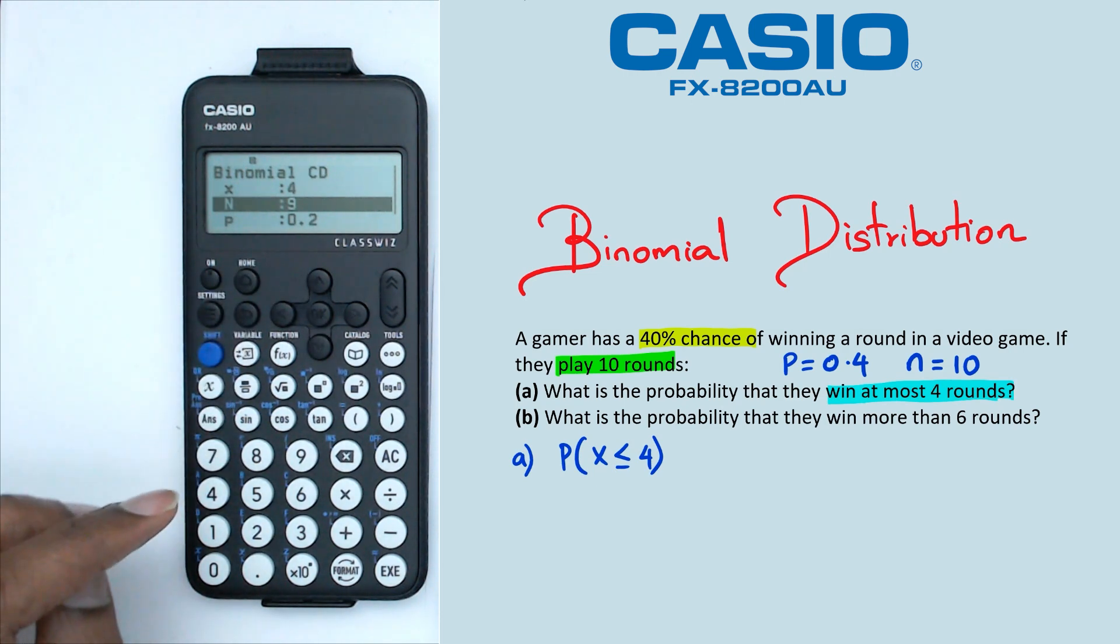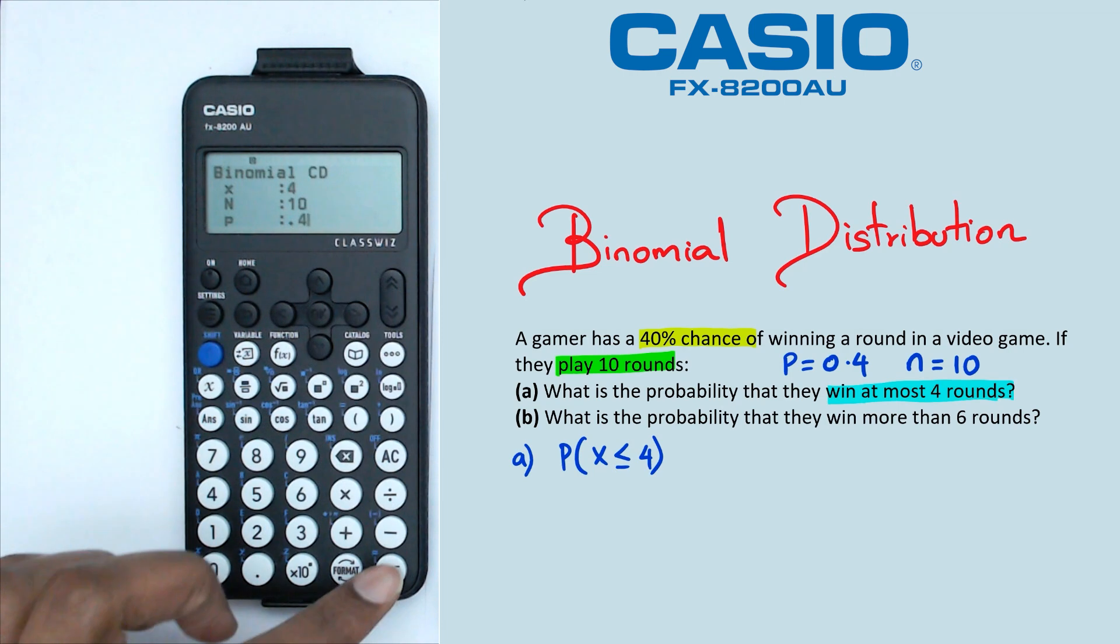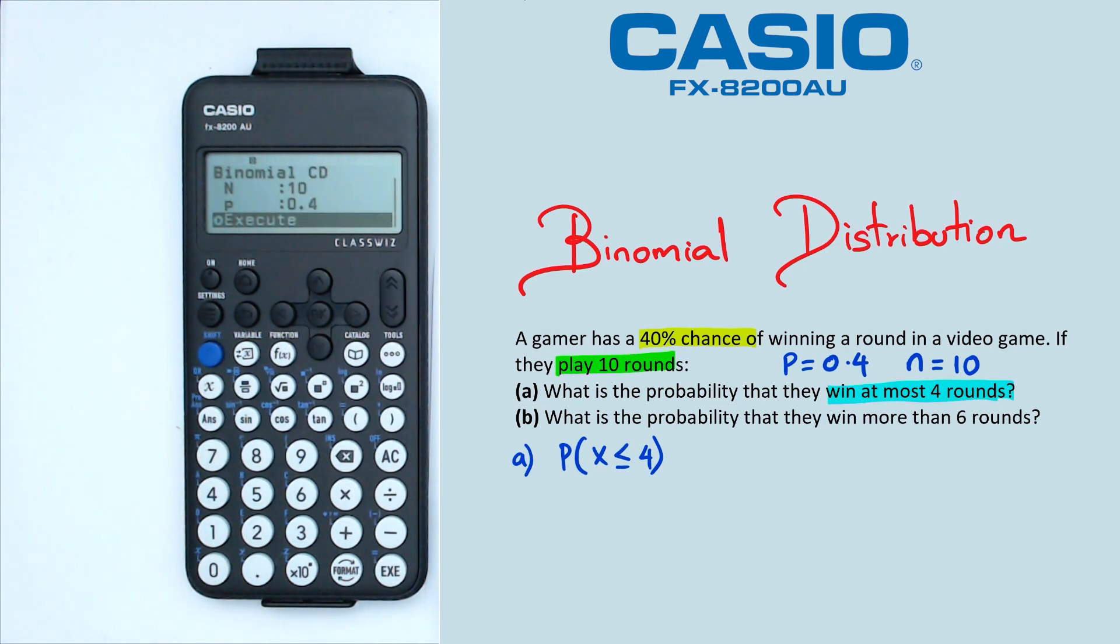Now n in this case is going to be 10, and then our probability of success is 0.4. So just to recap that, what the calculator is actually doing is when we're putting in that x is equal to 4, it actually covers 0, 1, 2, 3 and 4 as well.